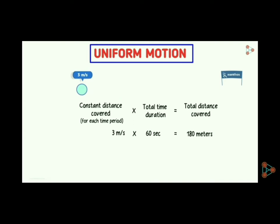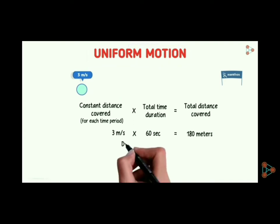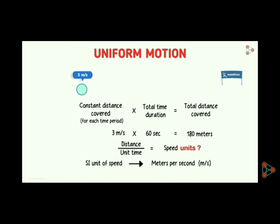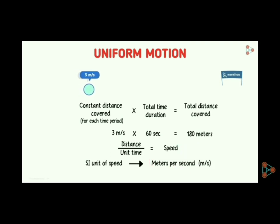So speed in uniform motion can be defined as distance per unit time. The standard unit of speed is meter per second, and other units are centimeter per second, mile per hour, or kilometer per hour. Meter per second is the standard basic unit we all use.